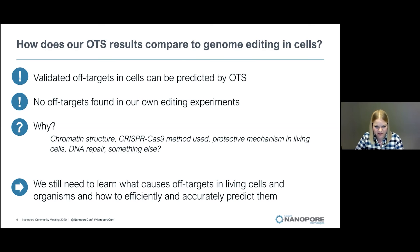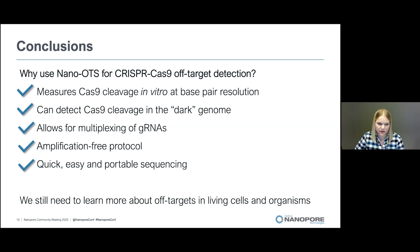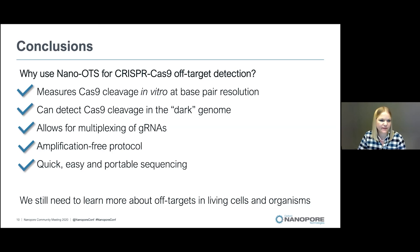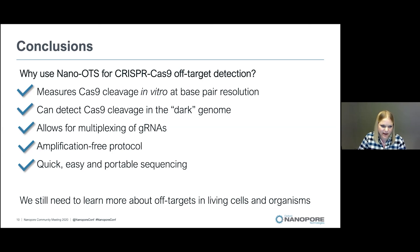This is also something we are currently working on in our lab. So why should you use nano-OTS for Cas9 off-target detection? We have shown that OTS measures Cas9 cleavage in vitro at base-pair resolution, and can detect Cas9 cleavage in the dark genome, which has not been shown before. You can multiplex several guide RNAs simultaneously, and this is a completely amplification-free protocol, meaning no PCR biases. The protocol is quick and easy, and the MinION makes it portable — you can perform the entire lab protocol in just one day.